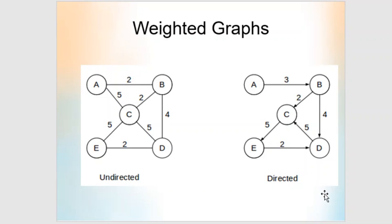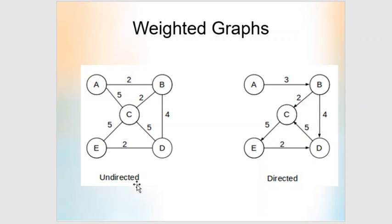These are examples of weighted graphs. On each edge, you can see a number associated with it — this is called the weight or cost of that edge. There are undirected weighted graphs, which have no direction on the edges, and directed weighted graphs, which have direction on the edges as well.